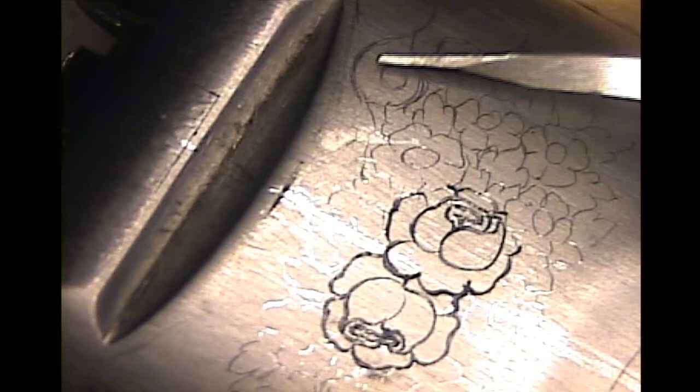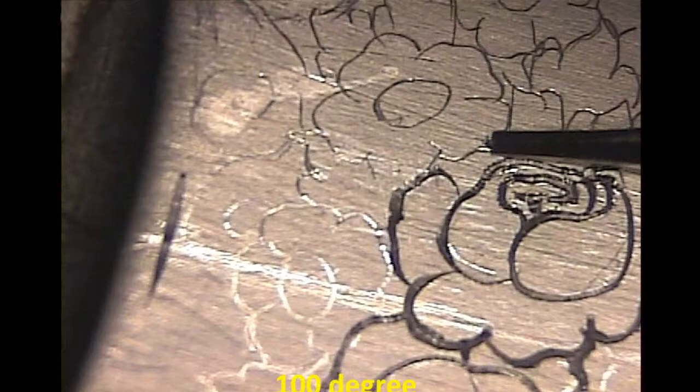We'll shade all around the bouquets of flowers. I'm using a 100-degree graver, which is what I normally use for English scroll. What I'm going to demonstrate is cutting slow, and I have a long stroke length so I get the progress marks in the cuts, because it really adds something to this kind of engraving.